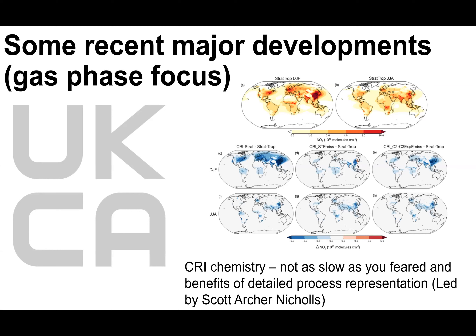Scott has led the development of the CRI chemistry scheme into UKCA, which is a huge improvement on the Stratrop scheme. It more than doubles the number of reactions and species in the model and provides traceability to gold-standard chemical mechanisms — specifically to the Master Chemical Mechanism developed by NCAS. It provides us with a reference chemical scheme. It is more complex and requires more computation, but it's not as slow as initially feared, and the benefits outweigh the costs.